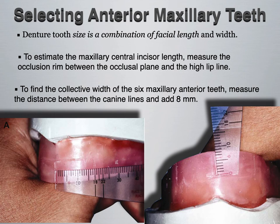Selecting anterior maxillary teeth: denture tooth size is a combination of facial length and width. To establish the maxillary central incisor length, measure the occlusion rim between the occlusal plane and the high lip line, as seen in the image. To find the collective width of the six maxillary anterior teeth, measure the distance between the canine lines and add eight millimeters. The markings made on the occlusal rim by the clinician during the occlusal rim visit are vital to choosing the proper size and shape denture tooth.